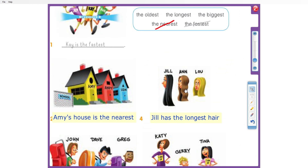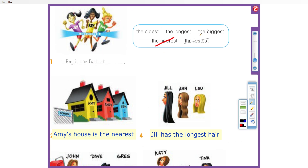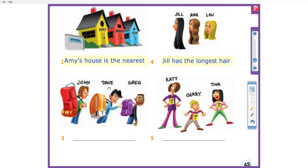Now let's look at picture three. We have John, Dave, and Greg, and the difference between them is their backpacks. Greg has a very tiny small purple backpack, Dave has a medium orange backpack, and John has a very big backpack — the kind used for camping, because it carries a tent and all the tools you need.